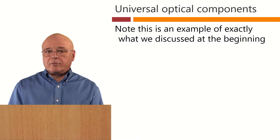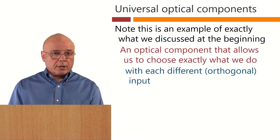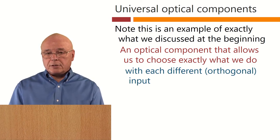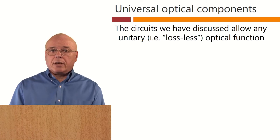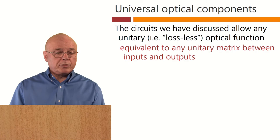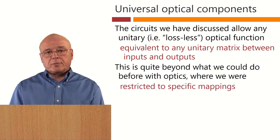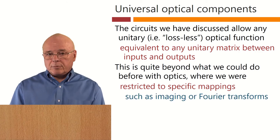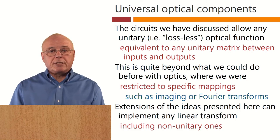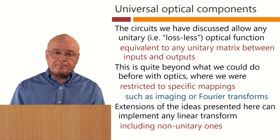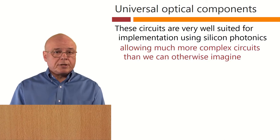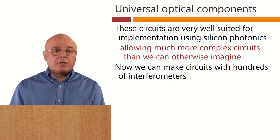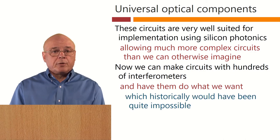Note this system is an example of exactly what we discussed at the beginning: an optical component that allows us to choose exactly what we do with each different input. We can choose any mapping we like between the inputs and the outputs. The circuits we have discussed allow any unitary, or essentially lossless, optical function equivalent to any unitary matrix between the inputs and outputs. This is quite beyond what we could do before with optics, where we were restricted to specific mappings, such as imaging or Fourier transforms. Extensions of the ideas presented here can implement any linear transform, including non-unitary ones.